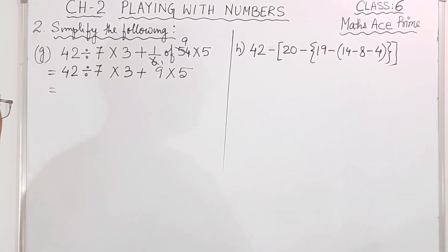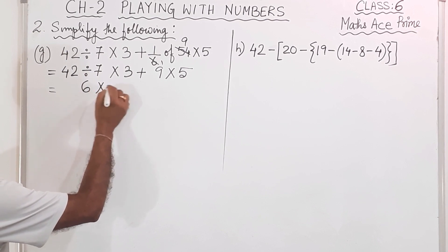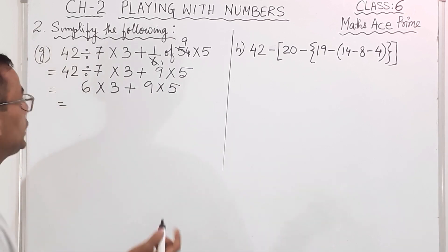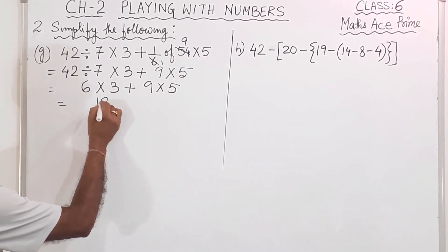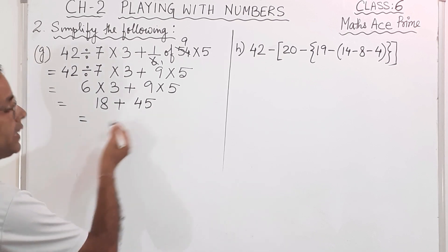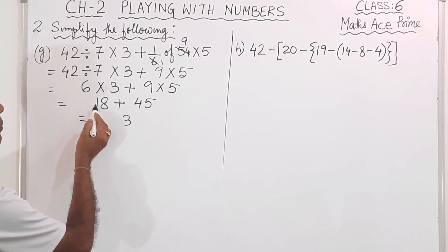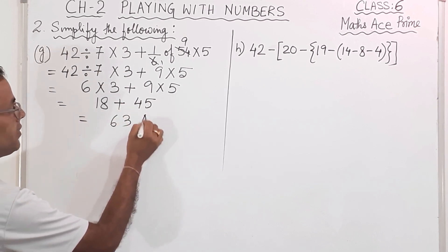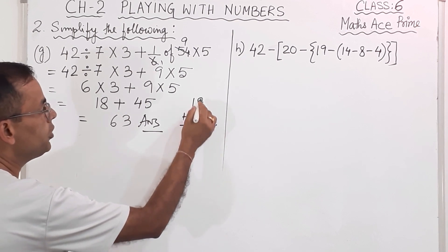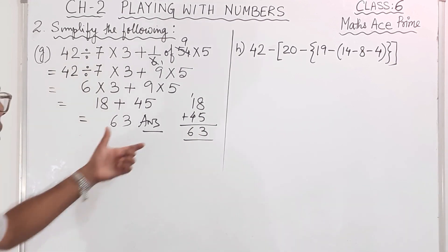Now after that 'off' done, D means division — so 42 divided by 7. 7 how much is 42? 6s are — so 6 into 3 plus 9 into 5. Now after that multiplication: 6 into 3 is 18 plus 9 into 5 is 45. Now we will simply add this: 5 plus 8 is 13, 1 carry, 1 plus 1 is 2, 2 plus 4 is 6 — so 63, and this is the answer.